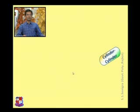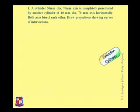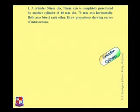Now we discuss the first problem — intersection of two solids, that is cylinder-cylinder. The given data is: a cylinder 50 mm diameter and 70 mm axis is completely penetrated by another cylinder of 40 mm diameter and 70 mm axis horizontally. Both axes bisect each other. Draw projections showing curves of intersection.